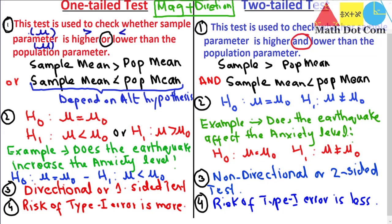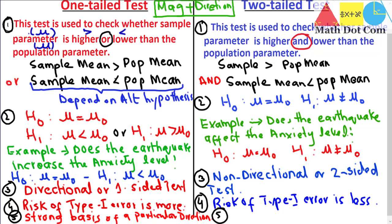For finding the magnitude and direction we need one-tailed and two-tailed test statistics. Another important difference is knowing when to use each. A one-tailed test is used when we have a strong basis for a particular direction. For example, the earthquake example is a good case — it is obvious that after an earthquake the anxiety level will increase, so it is very unlikely that anxiety will decrease. We have a strong basis to prove whether anxiety will increase after the earthquake.